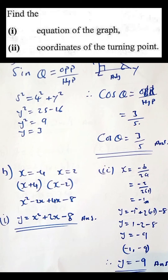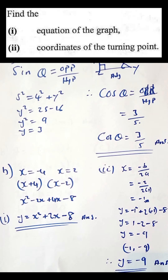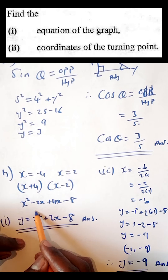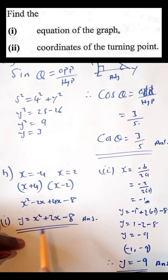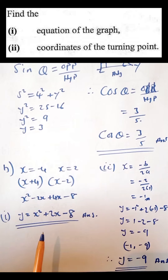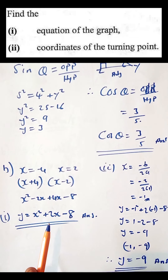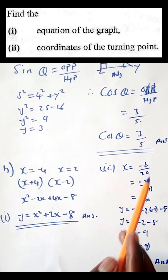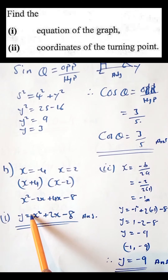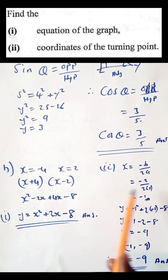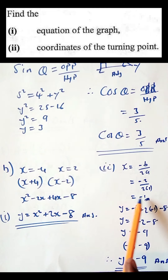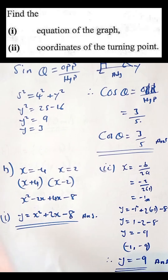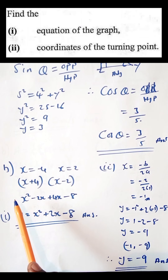In the equation y = x² + 2x - 8, a = 1, b = 2, and c = -8. So x = -2 / (2 × 1) = -2/2 = -1. The x-coordinate of the turning point is -1.